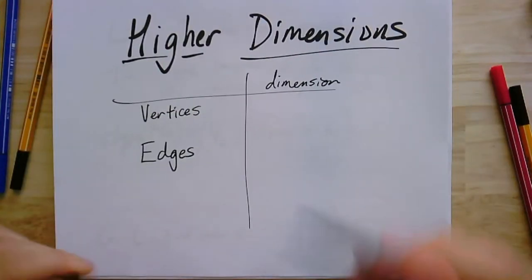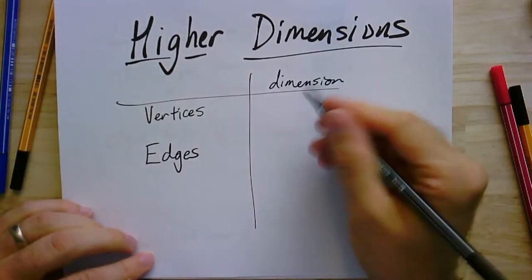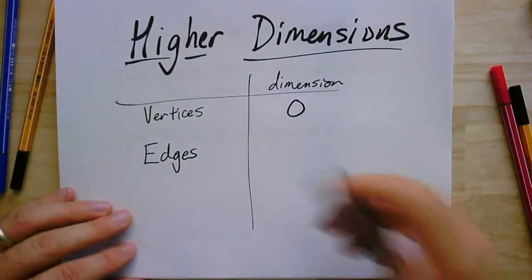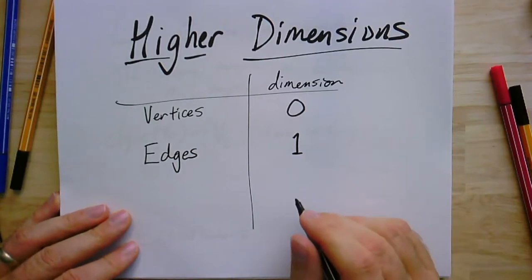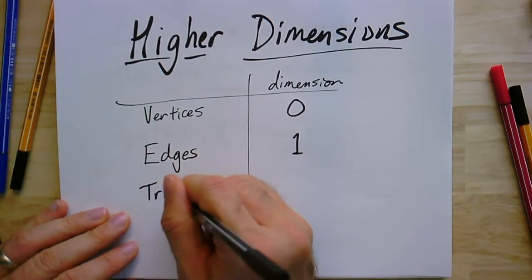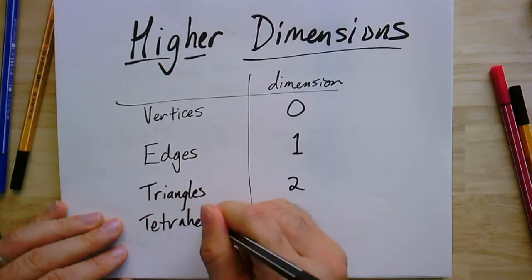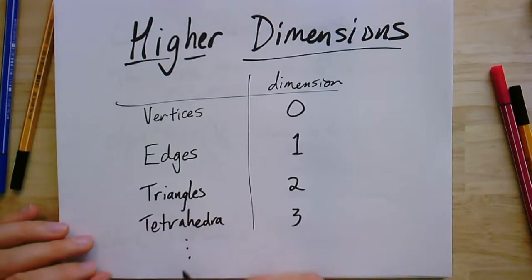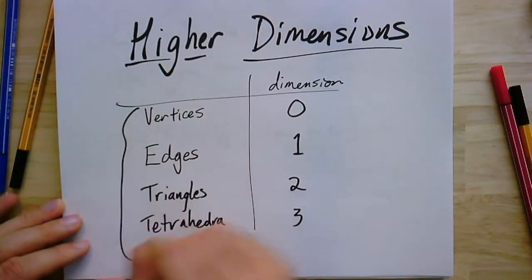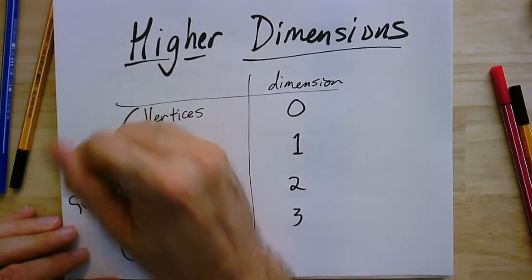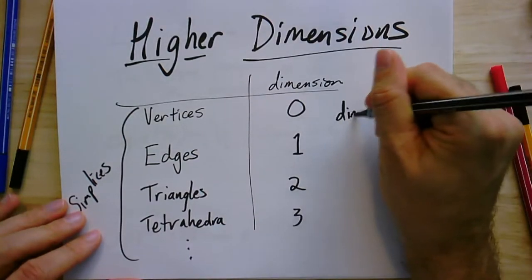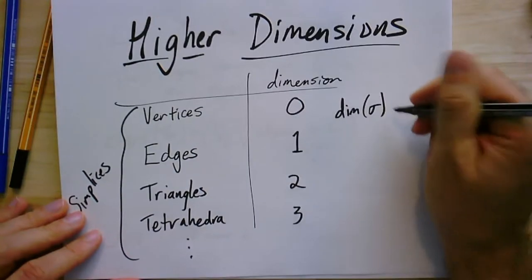In my never-ending quest to expand your mind, today we are going to go to higher dimensions. I have a graph and it has vertices and edges, and it's natural to think about the vertices as being zero-dimensional things and the edges as being one-dimensional things. With the introduction of simplicial complexes we were comfortable talking about triangles, which are clearly two-dimensional, and I can have tetrahedra which are three-dimensional, and I can just keep going. These are all simplices, and we talk about the dimension of a simplex: it's the size of the simplex minus one.